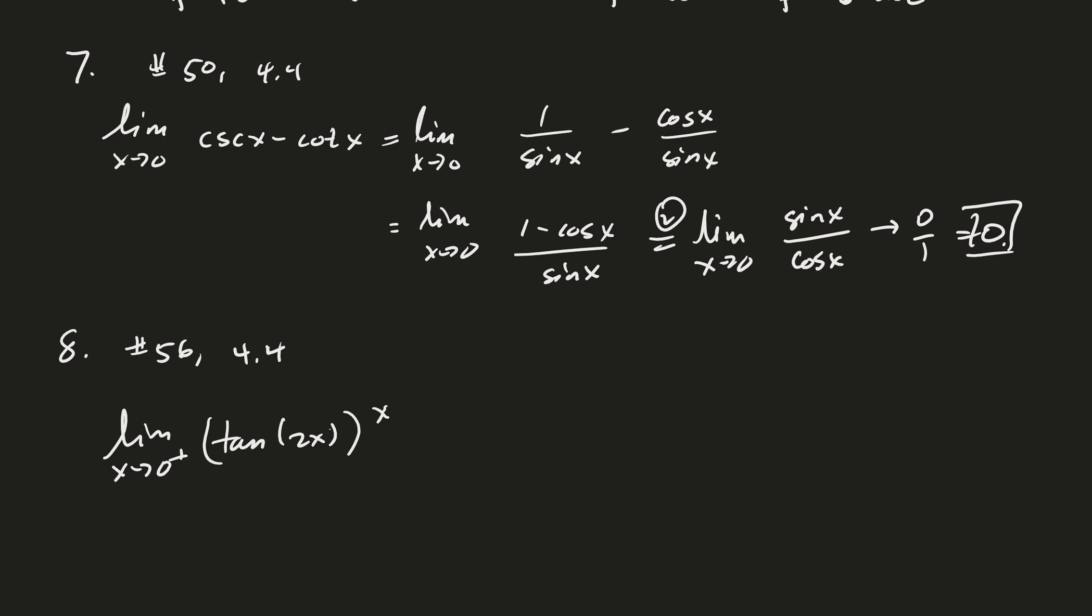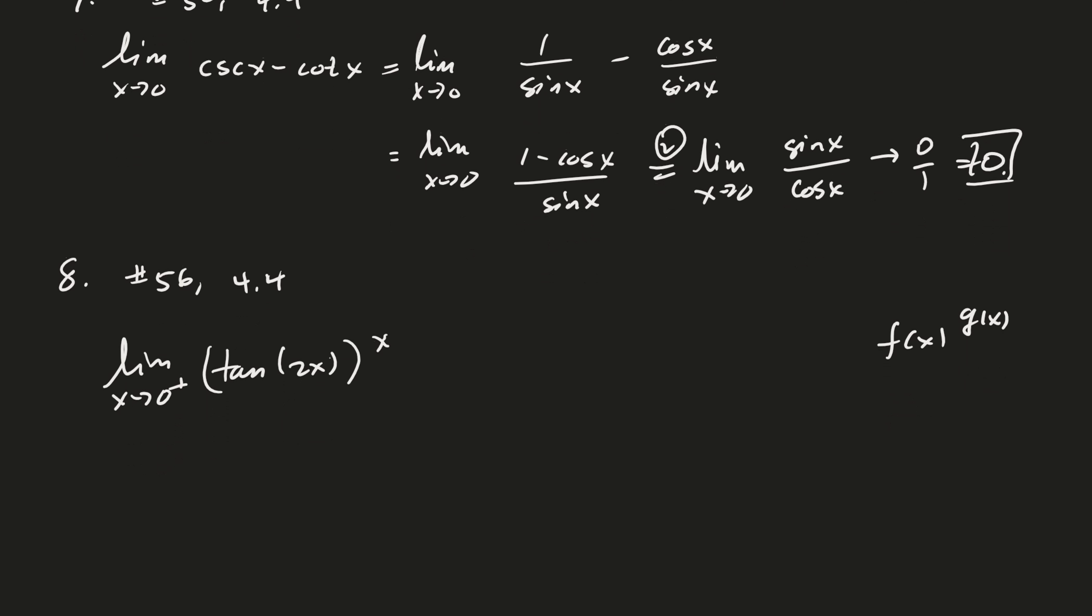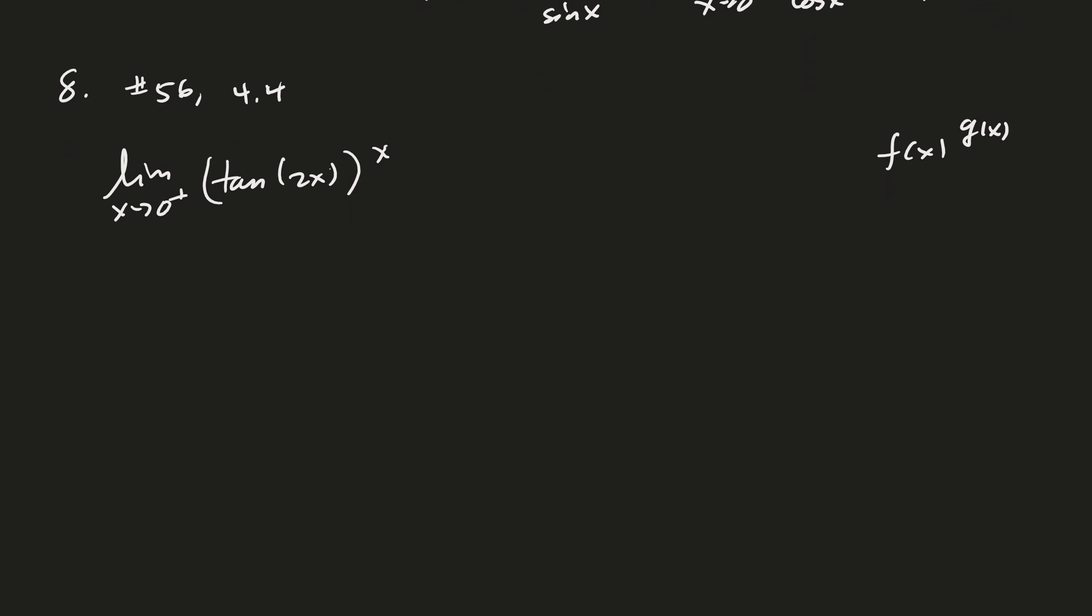Alright. So the next question is also in 4.4. But this time we have an f of x to the g of x power. And so just to remind you what we were doing there, do you remember what we did? So we took the log first. And so taking the log, we can write that as g of x times the natural log of f of x. So log first. And then secondly, now we can take the limit. Take the limit. And then after you take the limit, be sure and raise whatever you had to the, or exponentiate whatever you had. Put it in the exponential function.